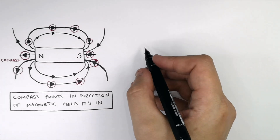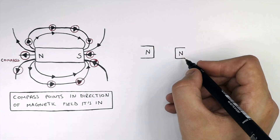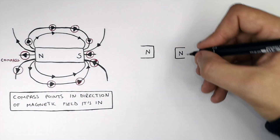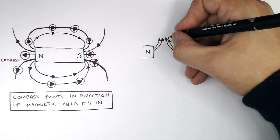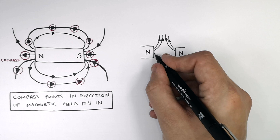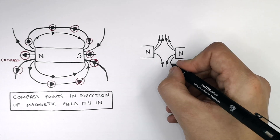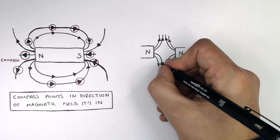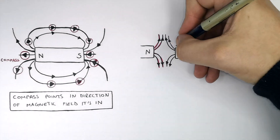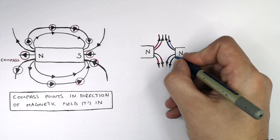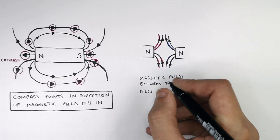What I'm drawing here are two bar magnets with north poles facing one another, and what I'm drawing are the magnetic field lines showing repulsion. The magnetic field between two like poles causes them to repel — so these two north poles are repelling each other. The magnetic field between two like poles repels.